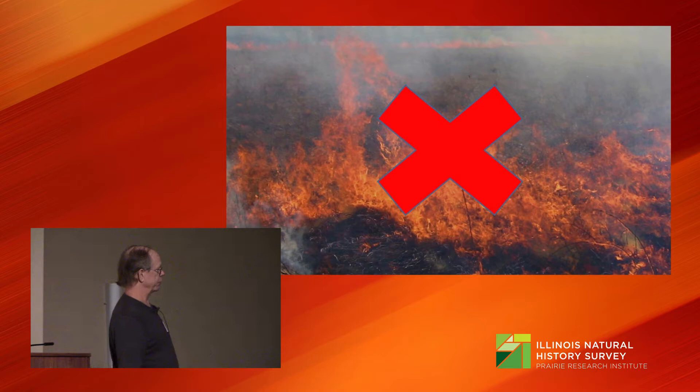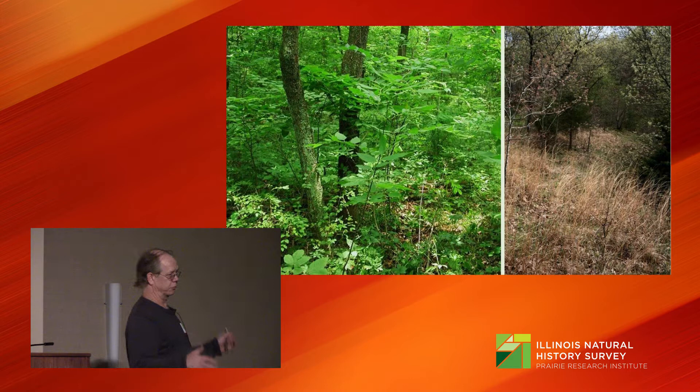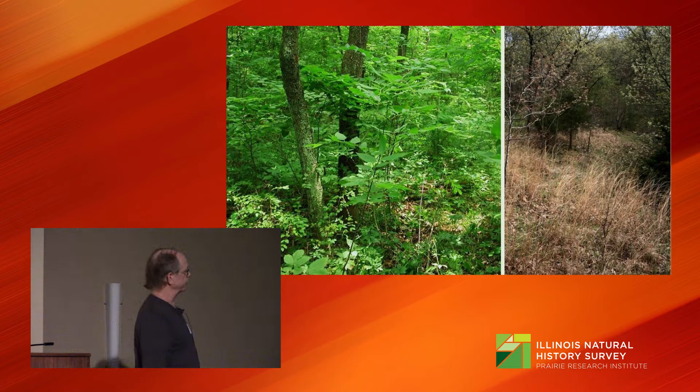Consequently, we have chronic levels of woody encroachment in our oak woodland habitats, shading the ground layer, interfering with oak regeneration, and reducing the overall size of our prairies and shading the ground layer of our prairies. The vast majority of the floristic diversity is contained in the herbaceous ground layer comprised of sun-loving native perennial species, or SNAPs.